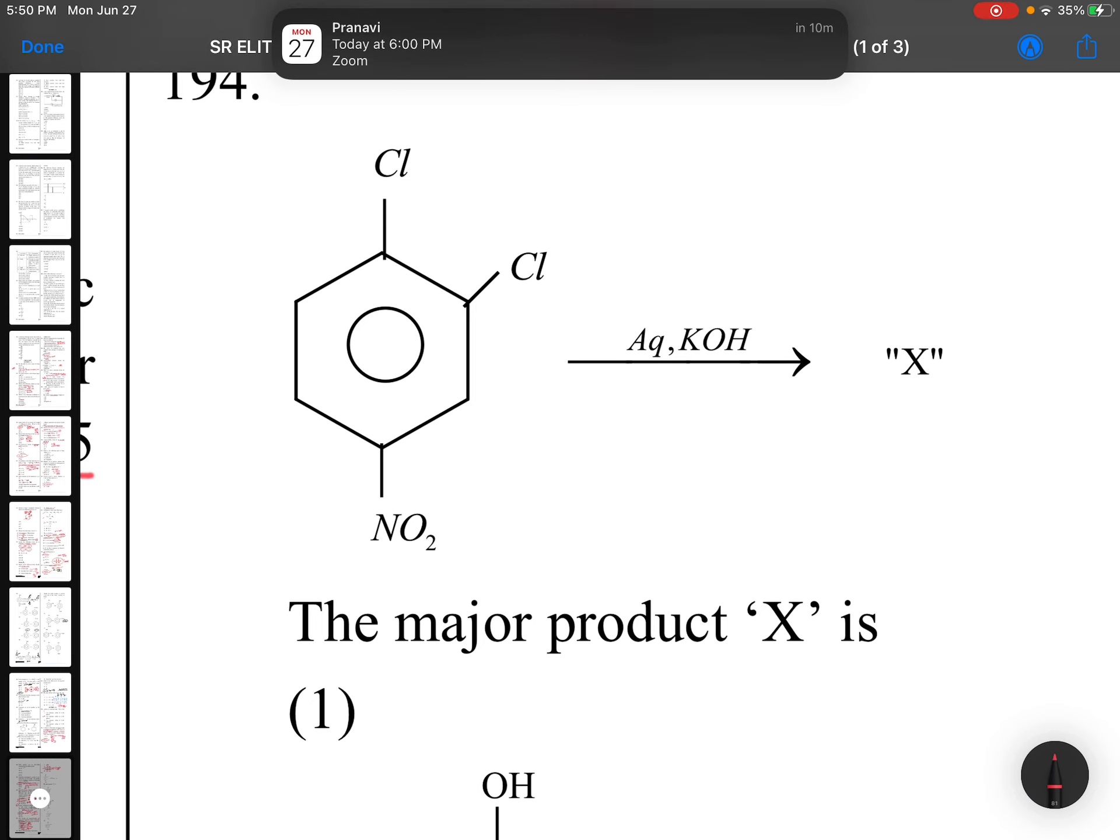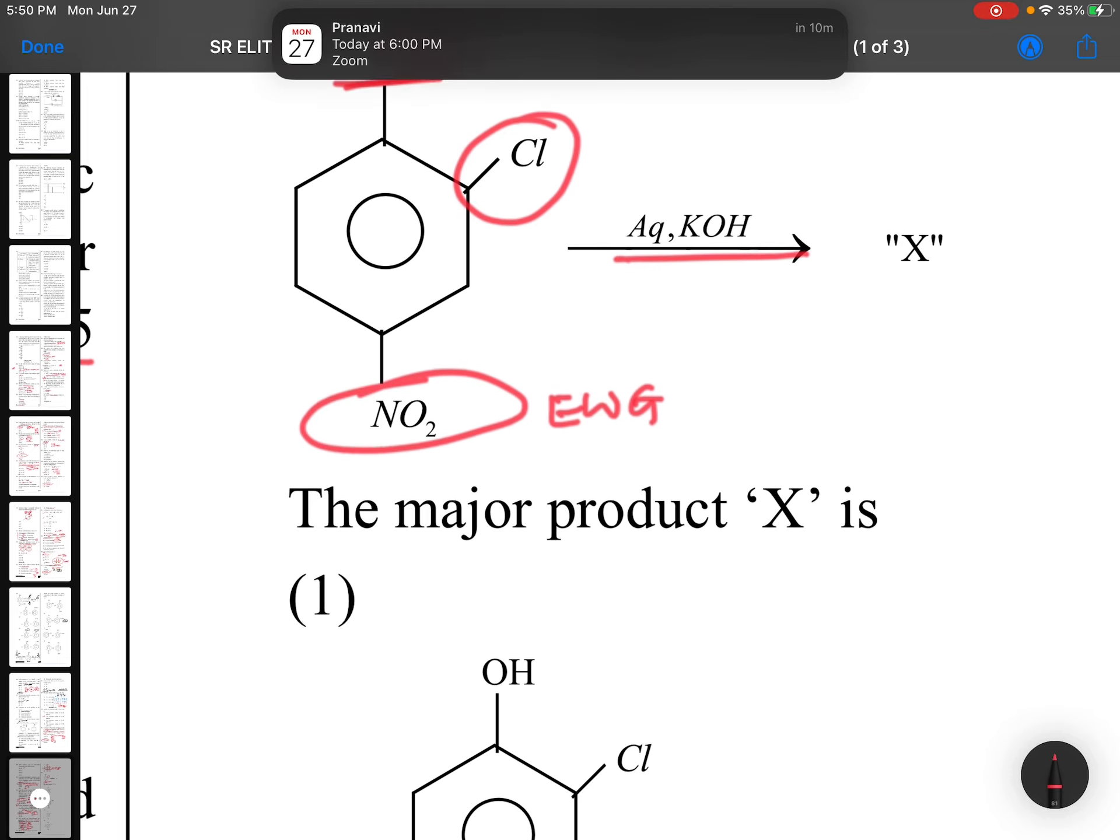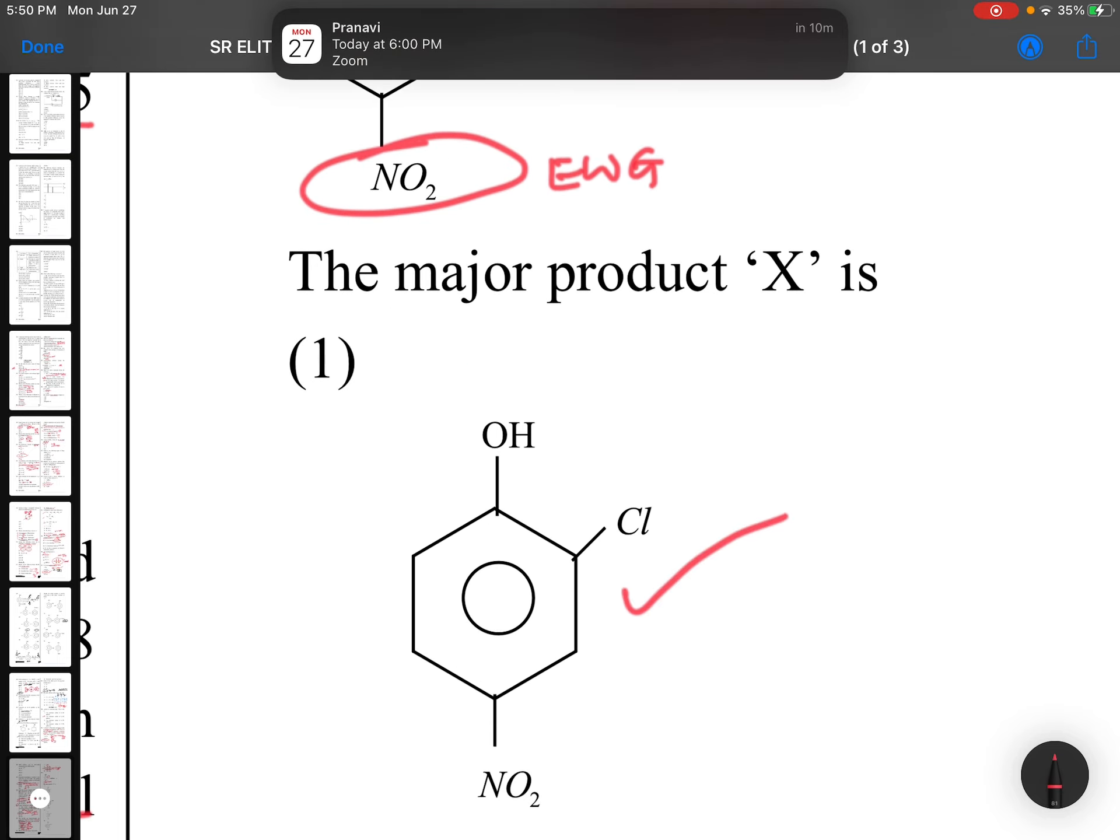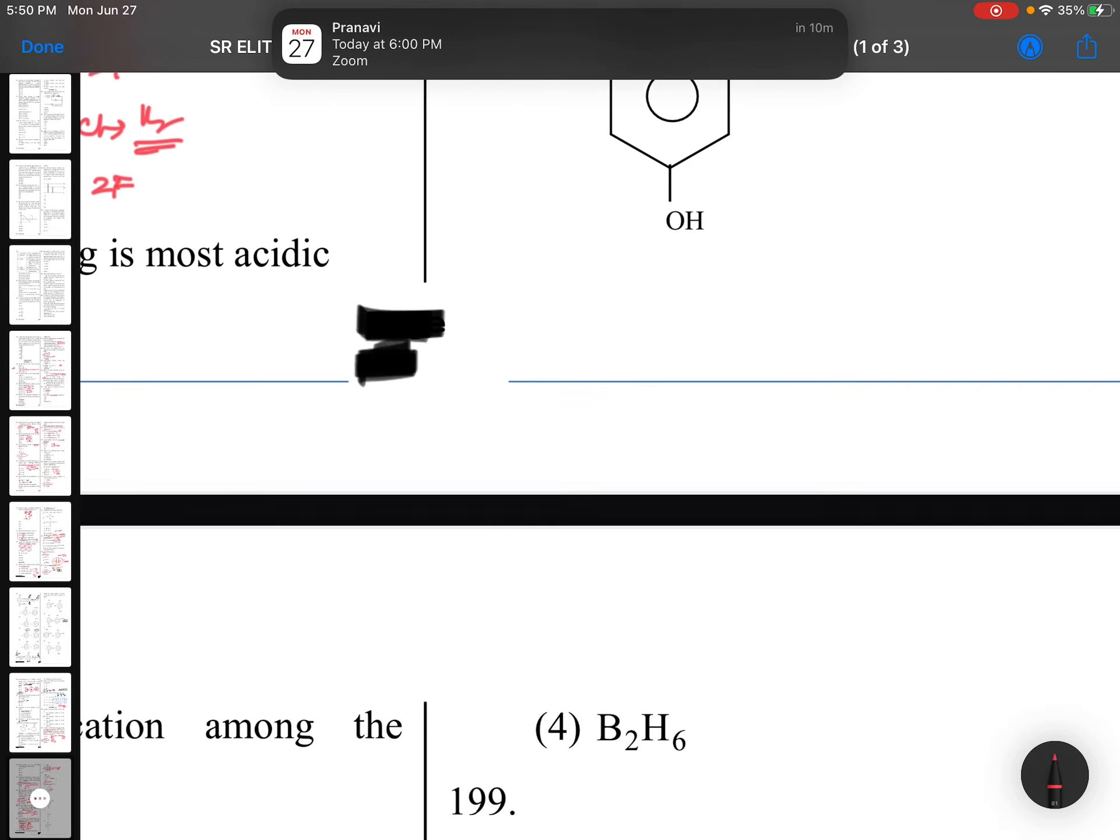Question 194: Aqueous KOH and NO2. NO2 is electron withdrawing group. When electron withdrawing group is there, ortho and para positions are better for removal of leaving group. So this can't go, this is only going. This is your answer, this can't go, only this is moving.